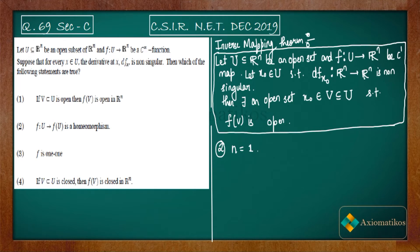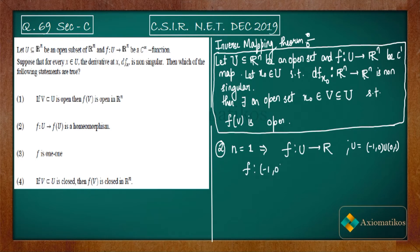I will shrink the problem to just the real line by choosing n = 1 — it's not mentioned that you cannot do this. With n = 1, the function will be from U ⊂ ℝ to ℝ. I choose U = (-1, 0) ∪ (0, 1) and define f(x) = x².